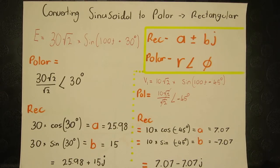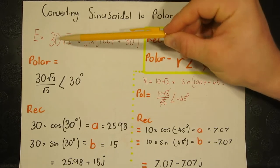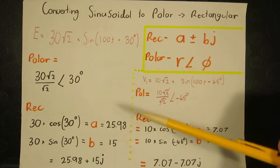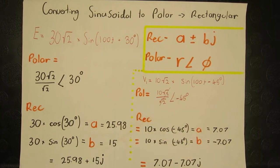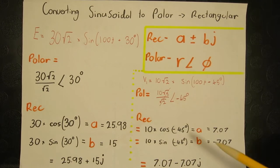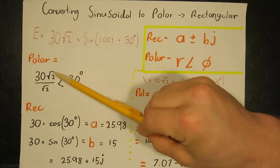With our waveform of the E source, we must extract the amplitude, then divide by root 2 to yield the RMS value. We then extract the phi value, that is the angle, and add it onto the end. We now have a polar form with a magnitude and an angle.